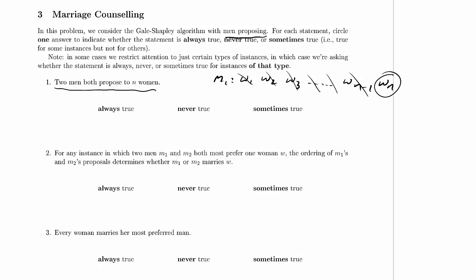He proposes to w-n — he's the first one to propose to n women. Does she accept or reject him? Well, every single other woman is engaged to someone, and they're each engaged to a different man. So there are n-1 men that are engaged; this is the only man who's not engaged. If he proposes to w-n and he's the only man who's not engaged, she has to say yes — she's clearly not engaged to anyone.